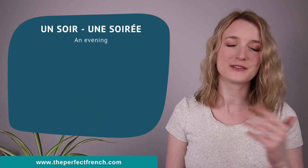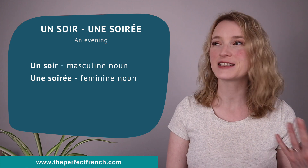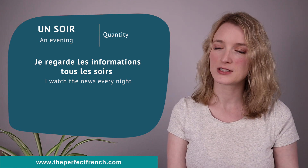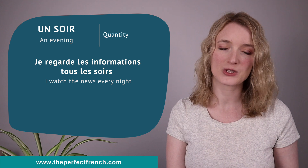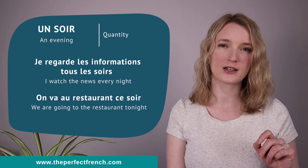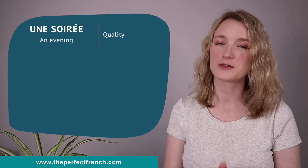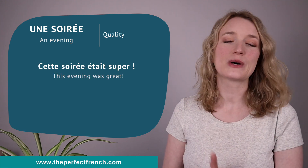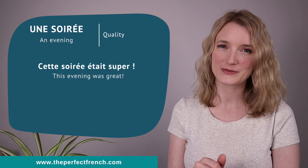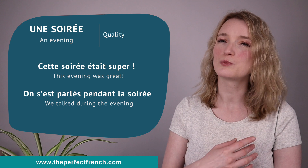Un soir and une soirée — un soir is a masculine noun, une soirée is a feminine noun, and both mean an evening. For quantity: je regarde les informations tous les soirs. On va au restaurant ce soir. For quality, we use une soirée: cette soirée était super. On s'est parlé pendant la soirée.